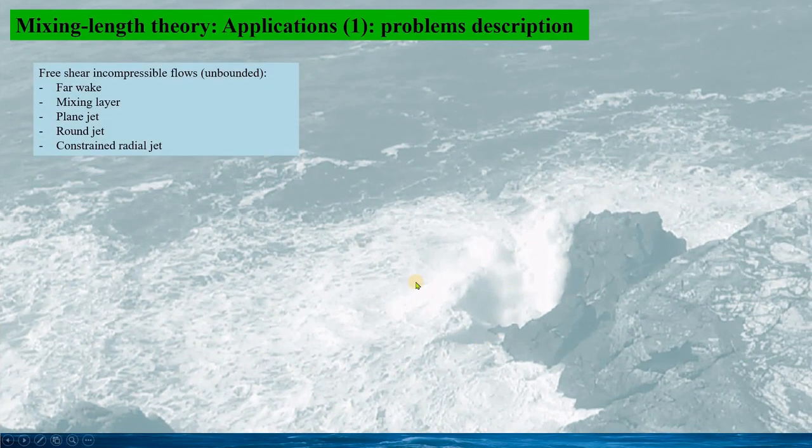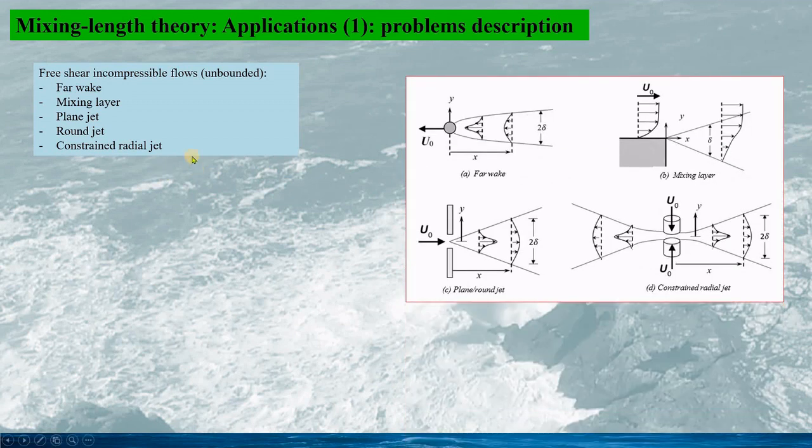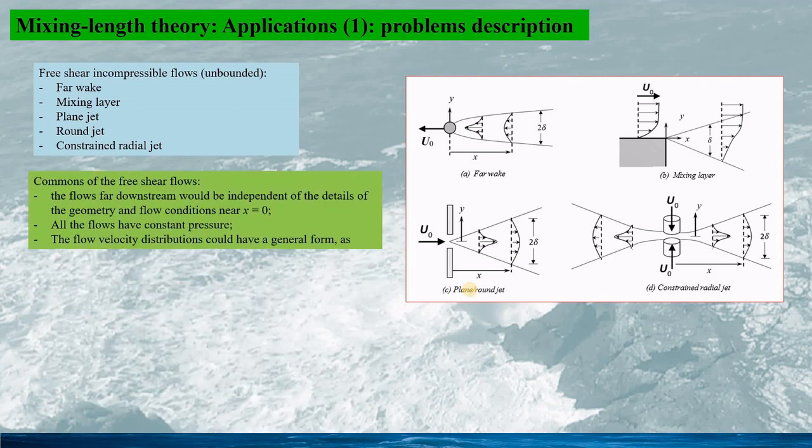In this slide, the mixing-length theory is applied for the free shear incompressible flows, including far-wake, mixing layer, plane and round jet, constrained radial jet. All these free shear flows have the common features. The flows far downstream would be independent of the details of the geometry and the flow condition near x equals to 0. All the flows have the constant pressure.